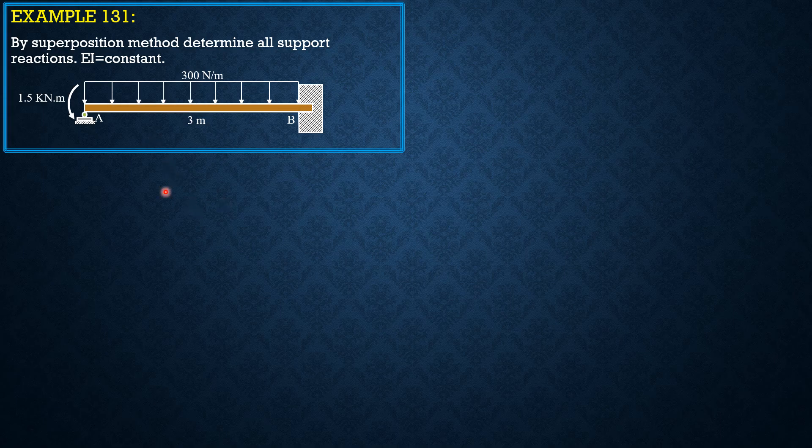So first we have to remove the support and determine the moment at the wall due to the loading zone. Let's apply the reactions first: AY, BY, and the positive moment at B, which is counterclockwise.